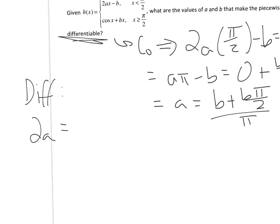The derivative from the right is the derivative of cosine, which is negative sine of x plus b. And since I'm still working about pi over 2, the sine of pi over 2 is 1. So I have negative 1 plus b.